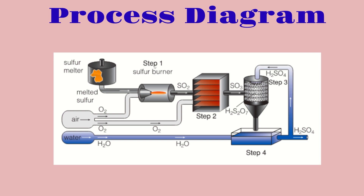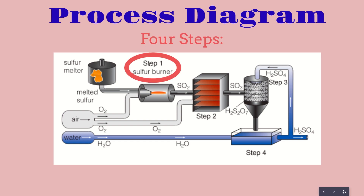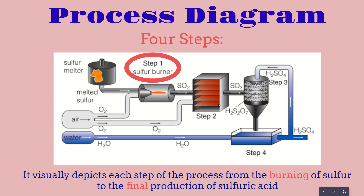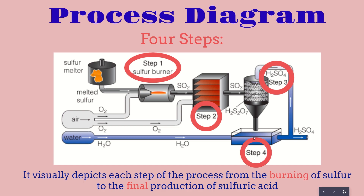Starting off we're going to talk about the process diagram and the different steps that sulfuric acid is created by. There are four different steps: step 1 is where the sulfur burner is, step 2 is where it gets converted inside of a catalytic converter, step 3 is where it reacts with a different substance, and step 4 is where it actually becomes H₂SO₄, which is sulfuric acid.